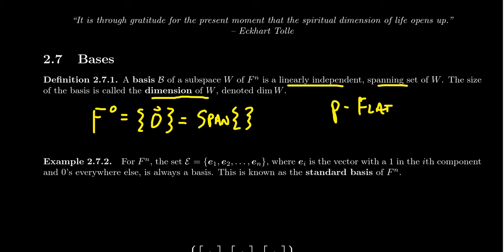And notice when you look at F^0, there's only two possible subsets. There's the empty set itself, and then there's the set that contains the zero vector, which is F^0 itself, right? No set that contains a zero vector can be linearly independent.